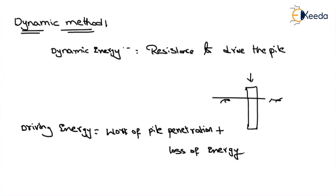Whatever may be the case, 100% energy is not utilized — somewhere there will be some loss of energy. So if you include the loss of energy plus the resistance from penetration, that is considered as dynamic energy, and that is related to the pile capacity.